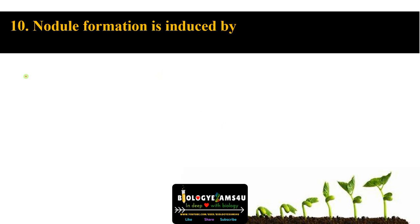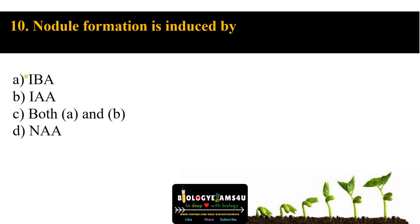Question number ten: nodule formation is induced by option A IBA, option B IAA (indoleacetic acid), option C both A and B, option D naphthalene acetic acid (NAA). The answer is indoleacetic acid. Many reports suggest that at the site of nodule formation, IAA concentration is very high. IAA is a natural auxin, whereas NAA is a synthetic auxin also used as a rooting hormone.